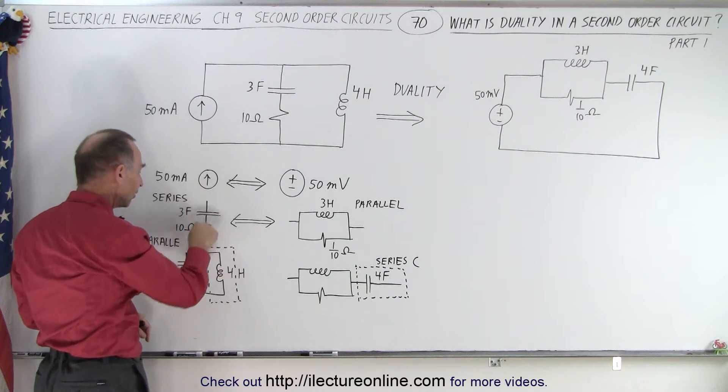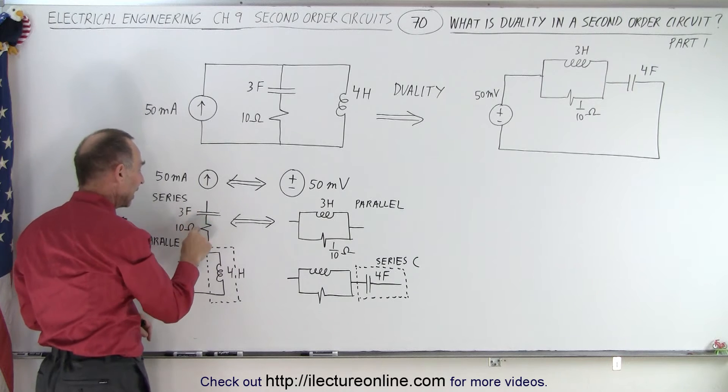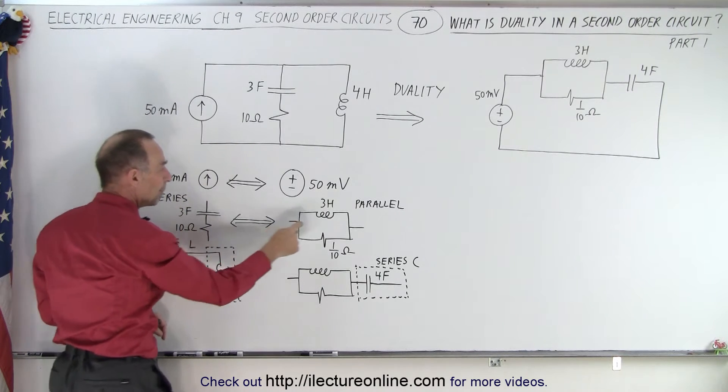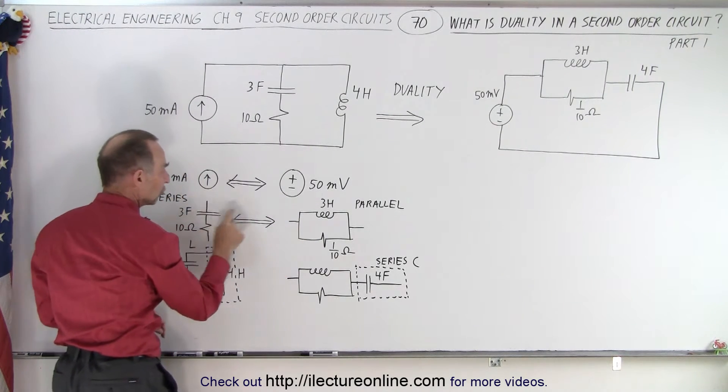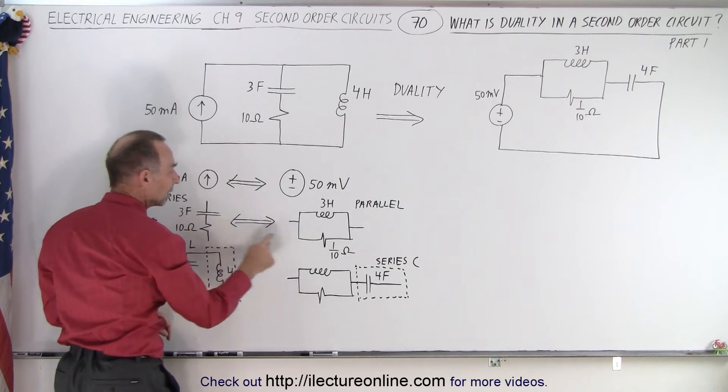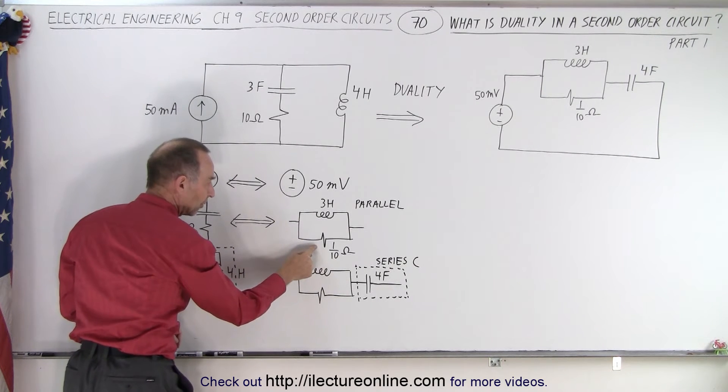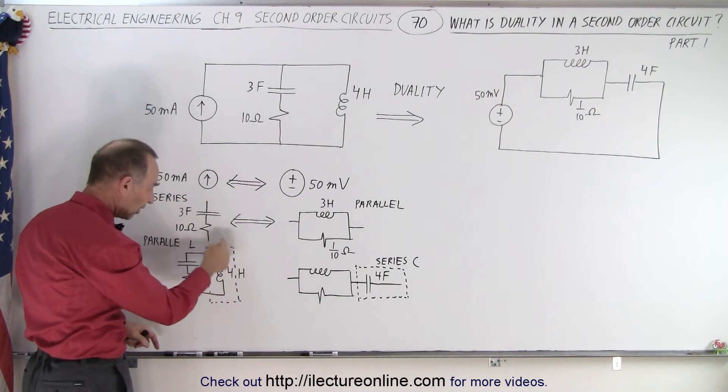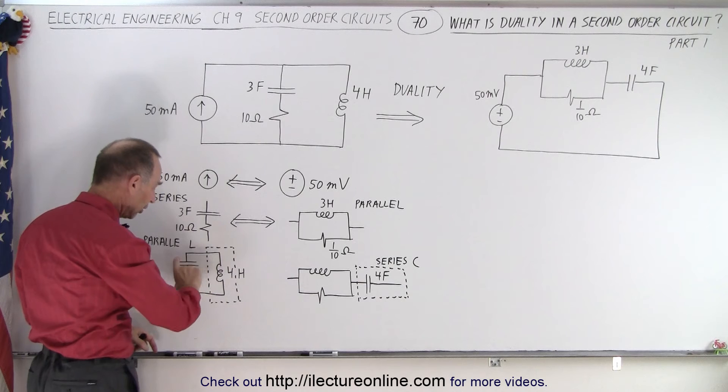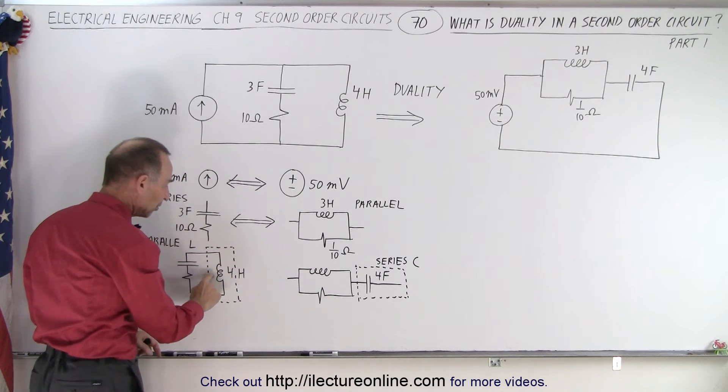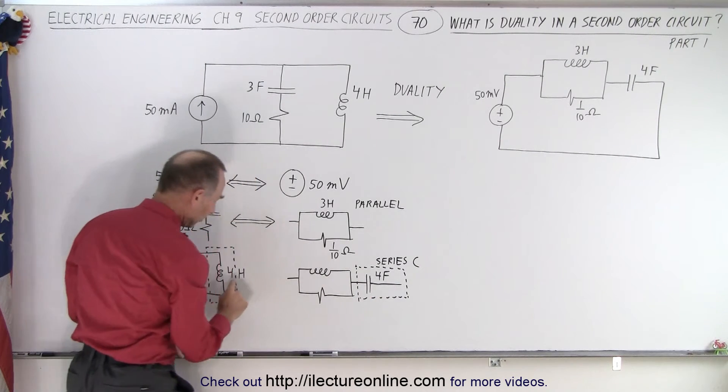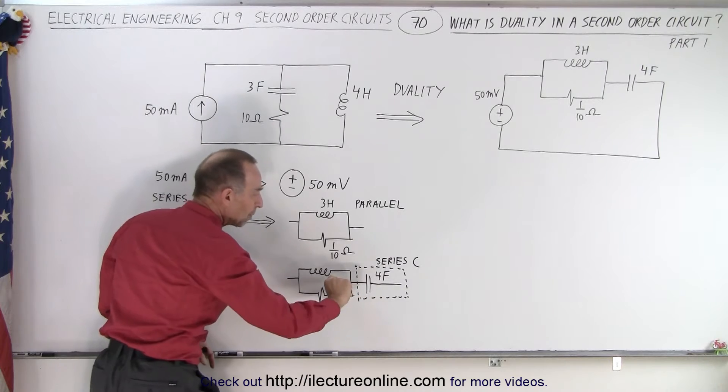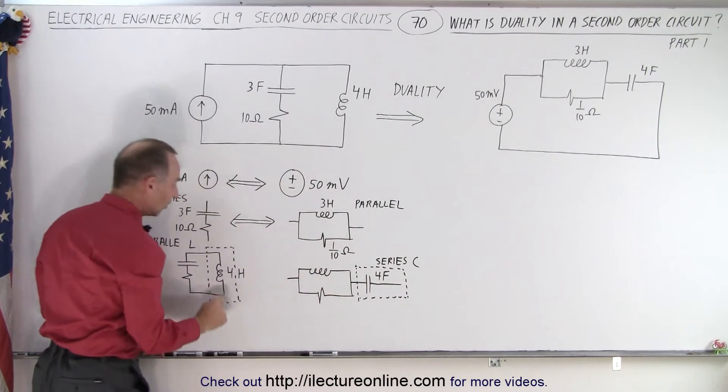Then we took the series connection of a capacitor and a resistor and turned it into a parallel connection. The capacitor changed into an inductor and the resistance became the inverse of the resistance. But notice from a series into a parallel connection. And then here notice that the inductor was in parallel to these two components. Now we turn it into, instead of inductor, into a capacitor and we make it in series instead of in parallel.